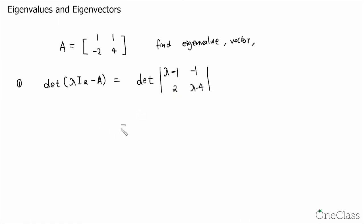This then gives us lambda minus 1 times lambda minus 4 minus negative 1 times 2, which is lambda squared minus 5 lambda plus 4 plus 2, which is lambda squared minus 5 lambda plus 6. We can factor this, and this will give us lambda minus 2 times lambda minus 3.